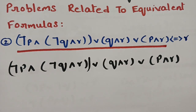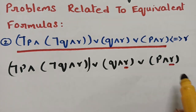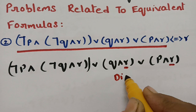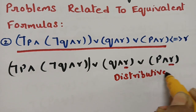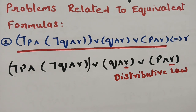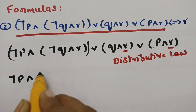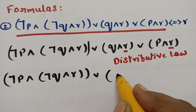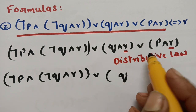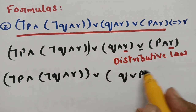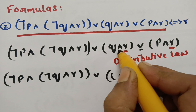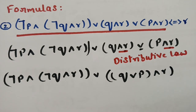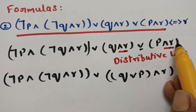Observing the expression, R is distributed to both (Q and R) and (P and R). So I apply the distributive law and take R outside. This gives: (negation P and negation Q and R) or [(Q or P) and R]. As R is distributed to Q and also to P, taking R outside is valid by the distributive law.